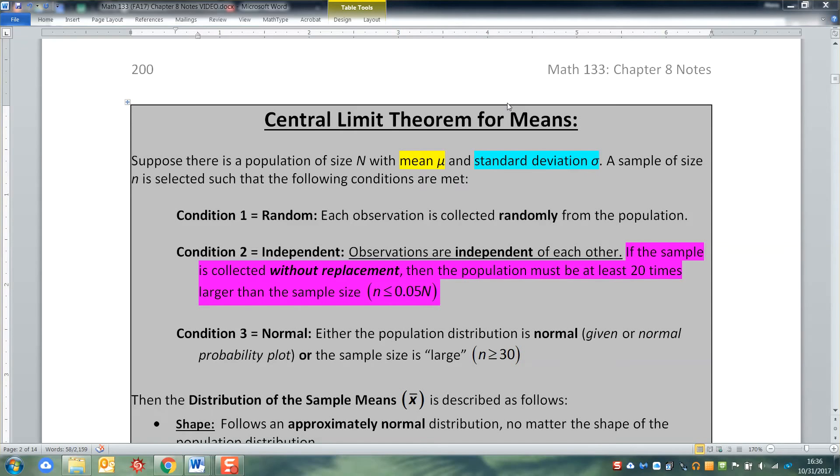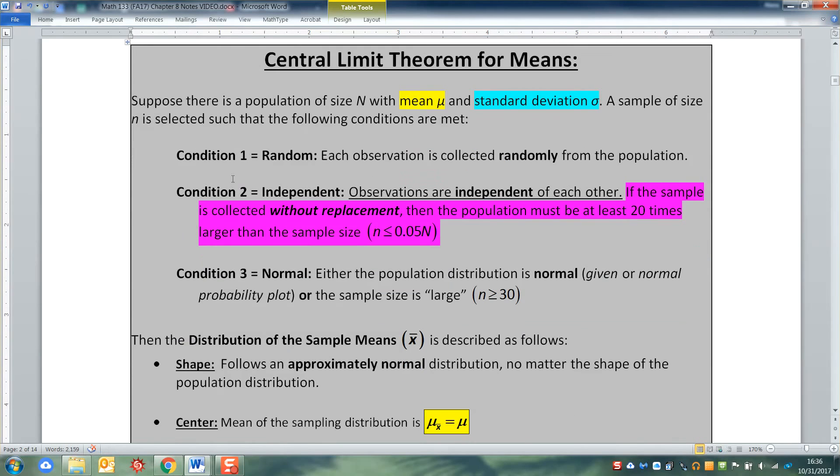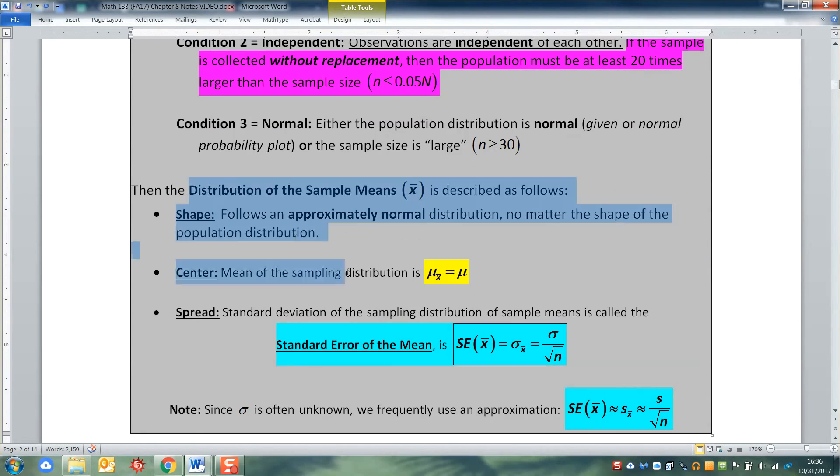We've spent quite a bit of time establishing the Central Limit Theorem - what are its premises, its conditions, what things have to be true in order for the Central Limit Theorem to apply, and then what are the consequences? Namely, what is the distribution of the sample means?